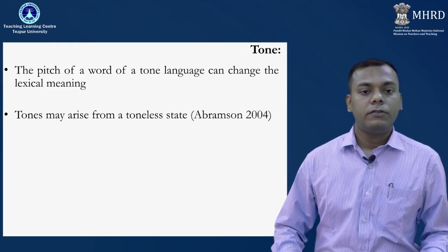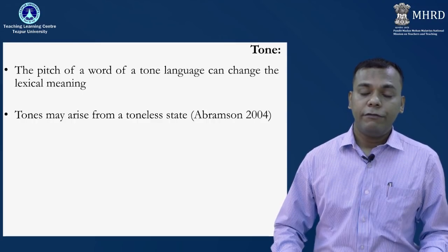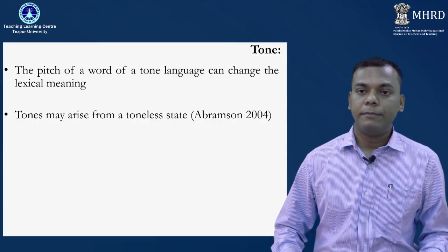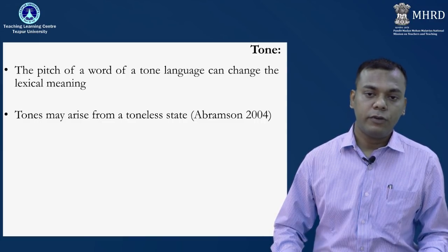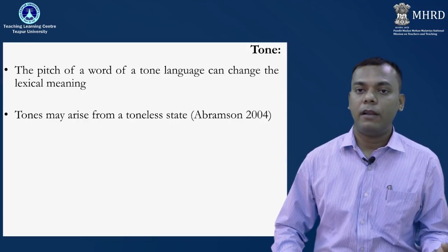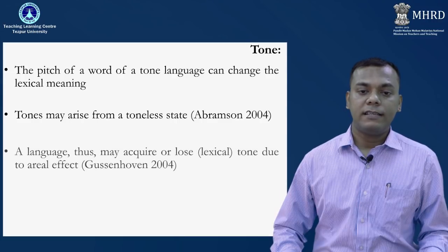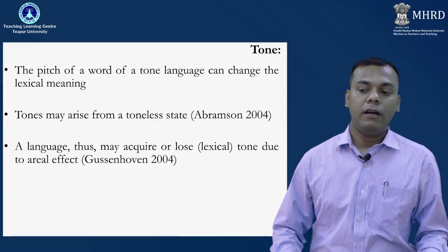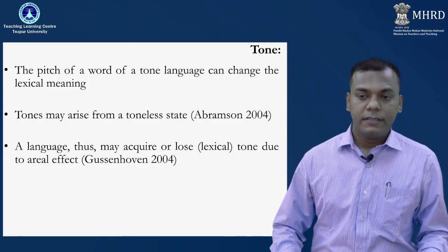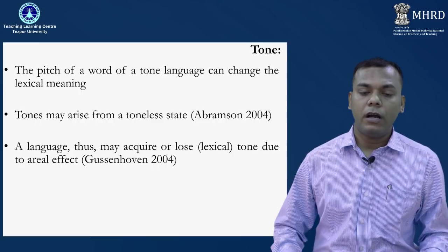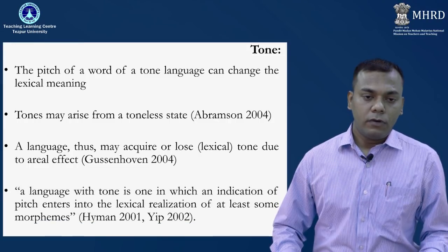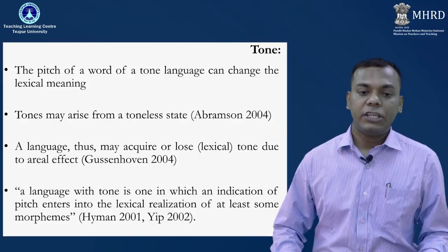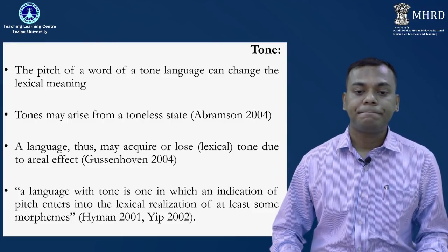The second point is very important. Tones may arise from a toneless state — that is to say, if you lose one of the segmental properties, say for example the distinction between voiced and voiceless obstruents, you may develop tone in the course of historical development. A language may also acquire or lose lexical tone due to areal effect. For example, Devuri, a Tibeto-Burman language spoken in Assam, is losing tone at this stage due to the influence of Assamese in the lexicon. The definition: a tone language is one in which an indication of pitch enters into the lexical realization of at least some morphemes — quoting Hyman and Ip.